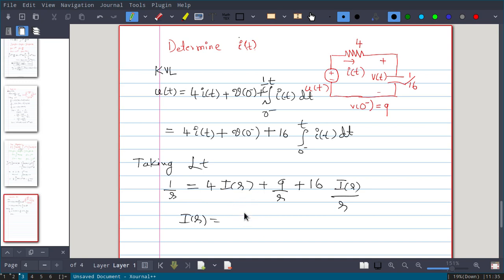Now you get the expression for i(s). If you simplify this one, you will get -2/(s+4). You try this, I am directly writing. Just solve this simple algebraic equation and you will get i(s) = -2/(s+4).